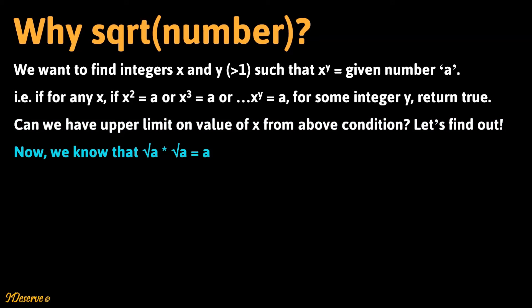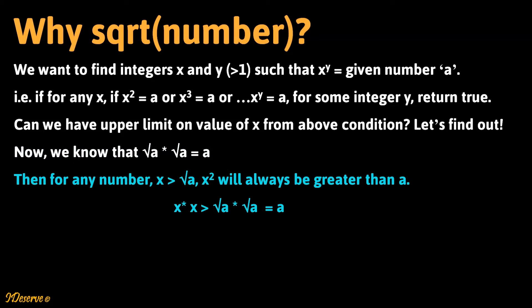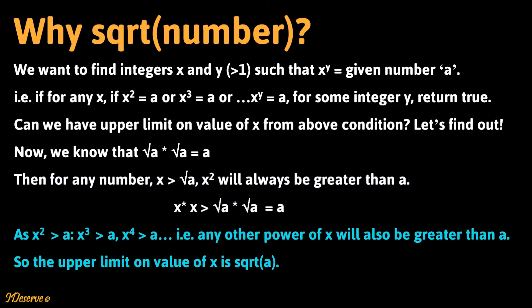Now we know that square root of a multiplied by square root of a is a. Then for any number x greater than square root of a, x squared will always be greater than a. Now as x squared is greater than a, x cubed will be greater than a. Similarly x raised to 4 will be greater than a. That is any other power of x will also be greater than a. So the upper limit on value of x is square root of a.